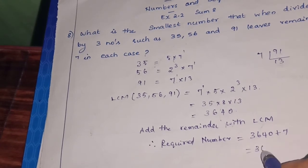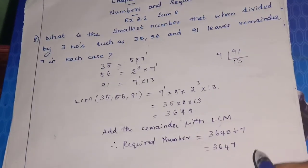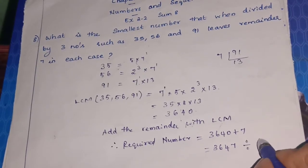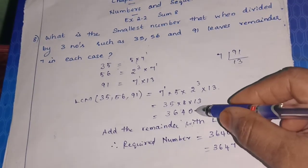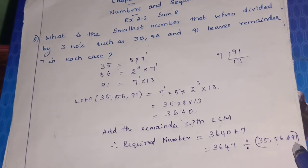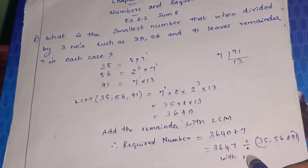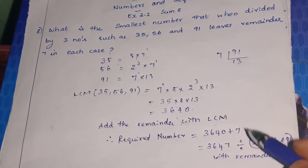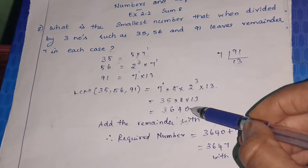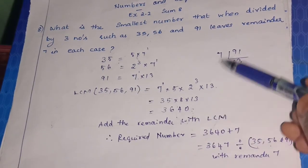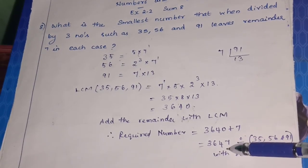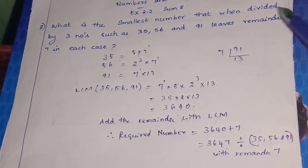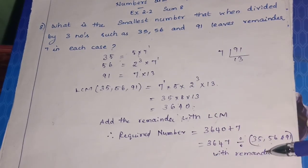So 3647 is our answer. This number is exactly divisible by 35, 56, and 91 with remainder 7. When you divide 3647 by each of these numbers — 35, 56, and 91 — you will get remainder 7 in each case. So 3647 is the required number.